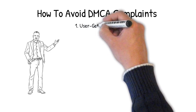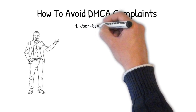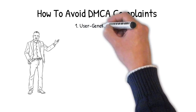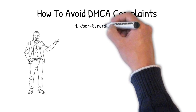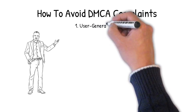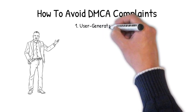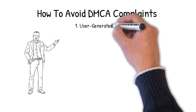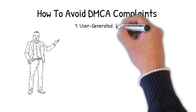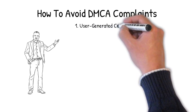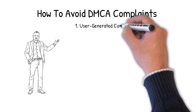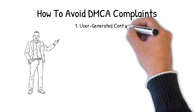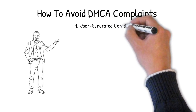A video such as this is one that I'm creating and uploading to YouTube. If there's something in this video that constitutes copyright infringement, YouTube cannot be held liable for it — but I can, because I'm the one that created it. I'm the user. That's a key aspect of Section 512: it applies to user-generated content. The DMCA only applies to user-generated content.